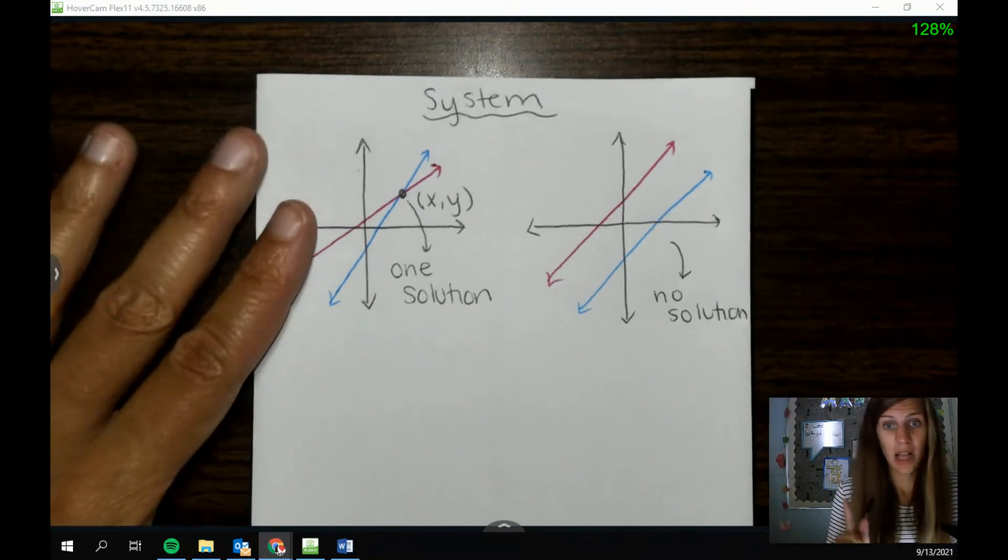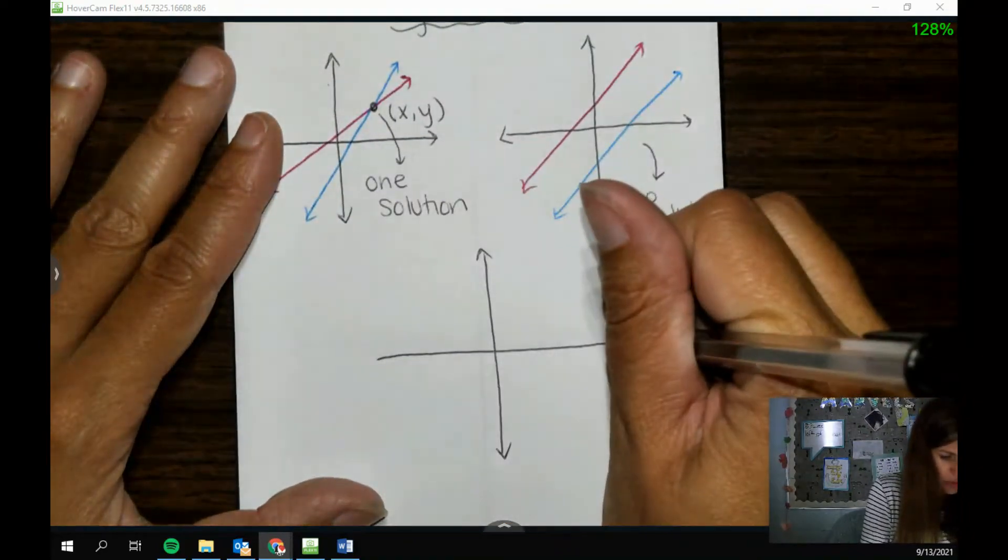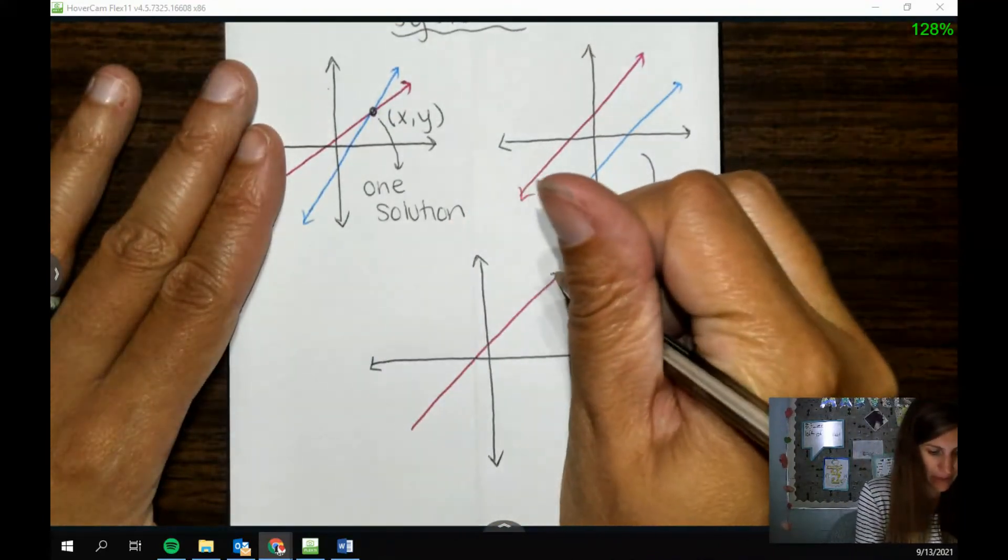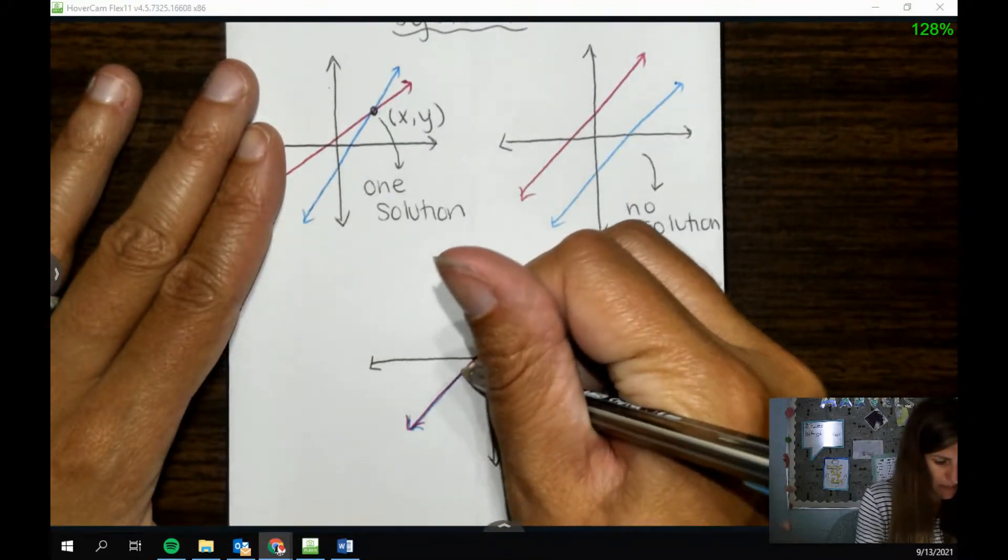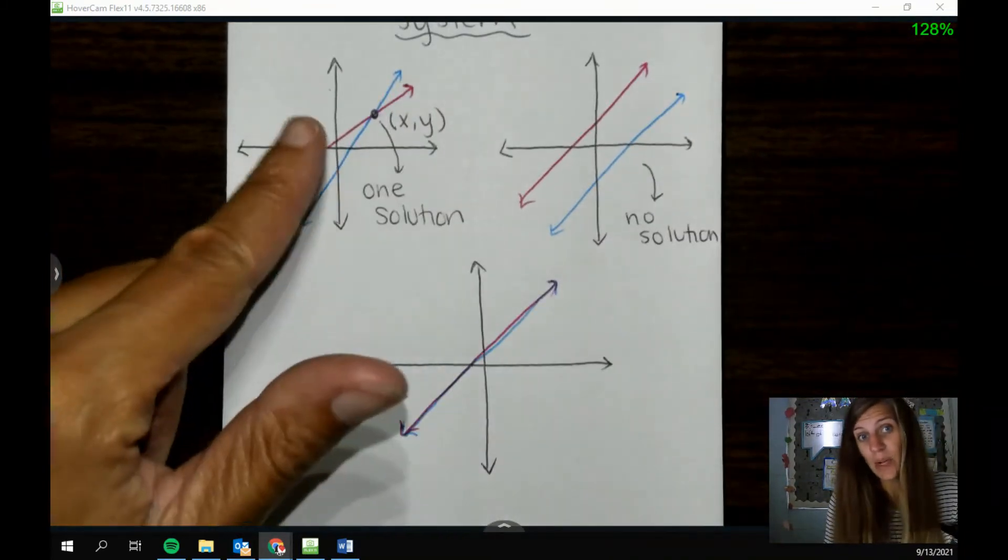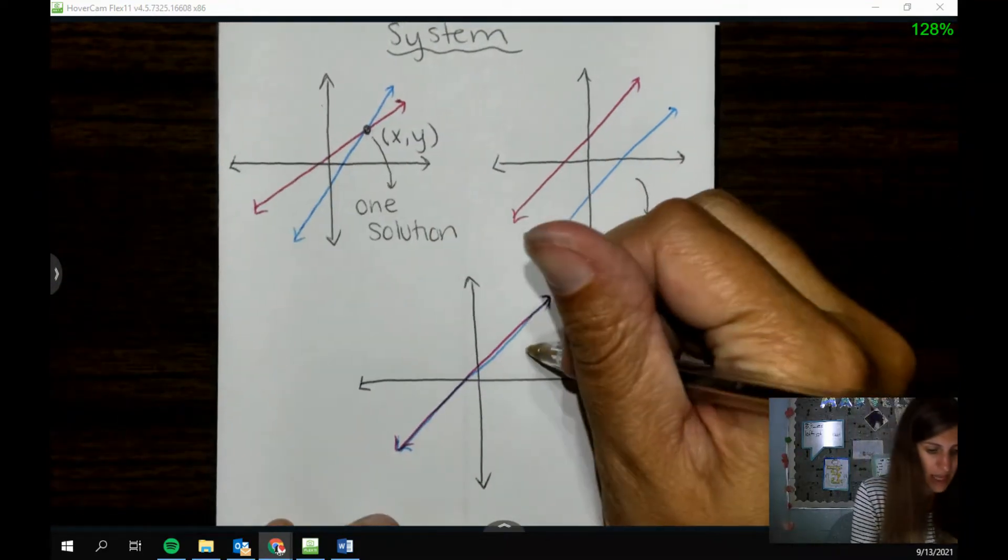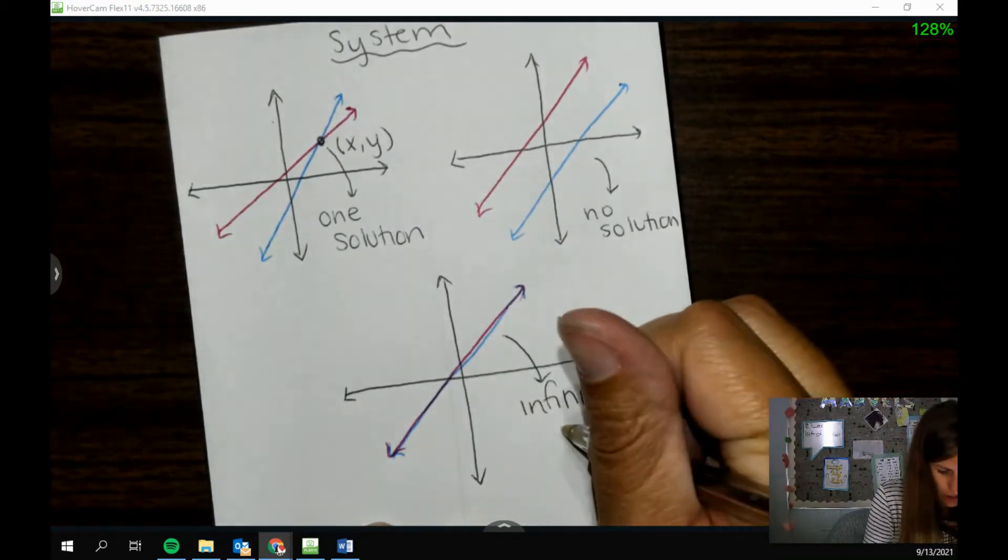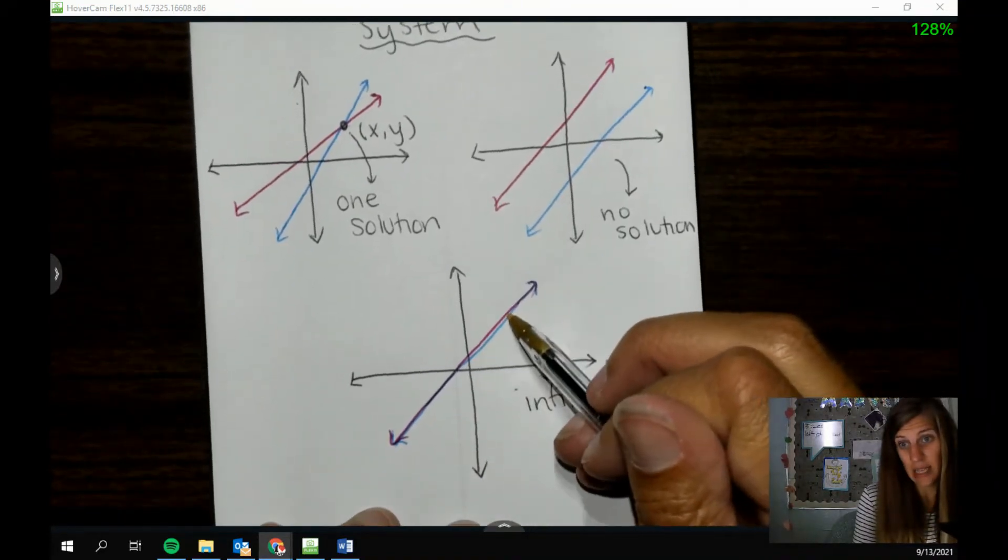There's actually one last thing that can happen, and this is kind of the weirdest one, because you'd think you'd notice. But what could happen is I draw my line on my graph, and then I go draw the other one, and it happens to be right on top of this one. They're like the same line on top of itself. So again, if I'm looking for where they touch each other, or not at all, this one, they touch each other all the time. So we have infinite solutions on this one, because literally anywhere that I go is a solution.